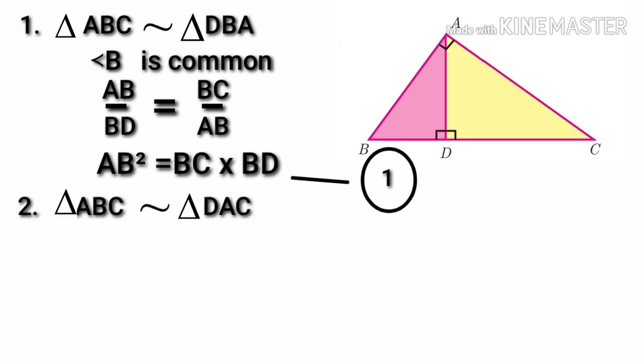Now to prove the second part, the big triangle ABC is similar to second triangle DAC. In this triangle, angle C is common. Now we need the second side, that is AC. So underline AC on both sides. Similarly, underline the corresponding letters.